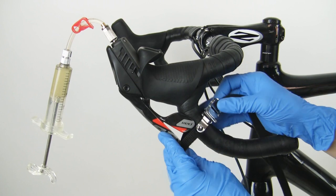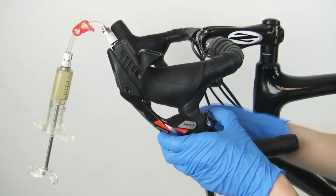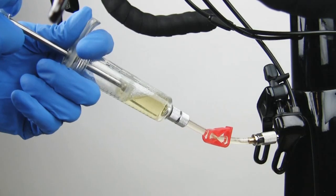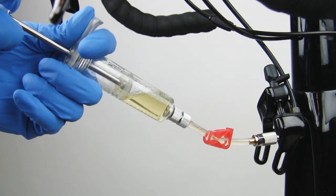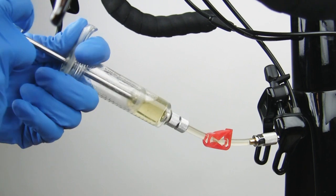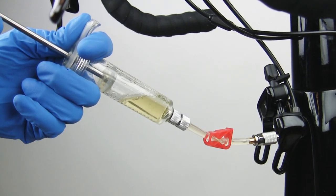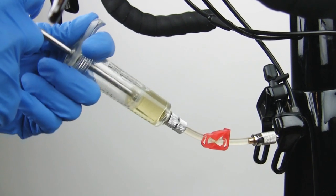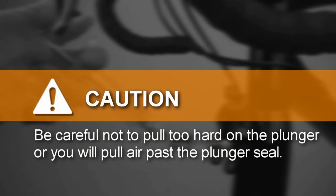Pull the brake lever to the handlebar and fasten it with a toe strap or rubber bands. Pull out on the caliper syringe plunger, then gently push in on the plunger to pressurize the system. Repeat this procedure several times until large bubbles stop coming out of the caliper. Be careful not to pull too hard on the plunger or you will pull air past the plunger seal.